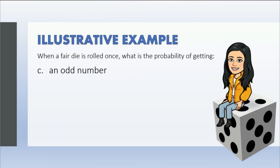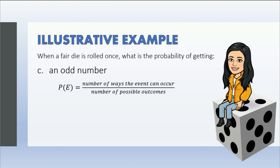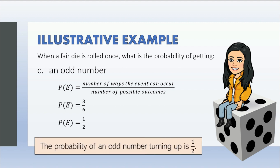Letter C: probability of getting an odd number. We use the formula for probability of simple events. How many odd numbers are there in a die? It's three — we have one, three, and five. For the number of possible outcomes, again we have six. We now have three over six, and three over six can be simplified to one over two. Therefore, the probability of an odd number turning up is one over two. It means it has an even chance.